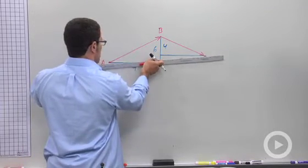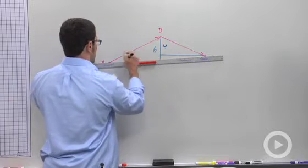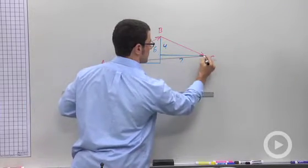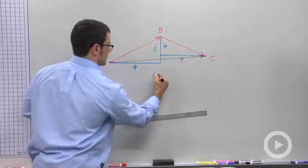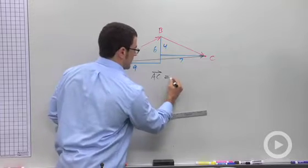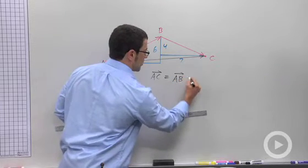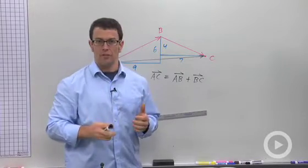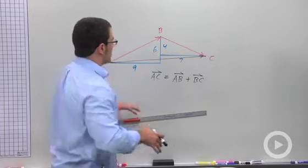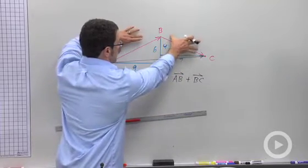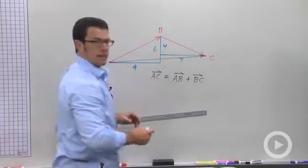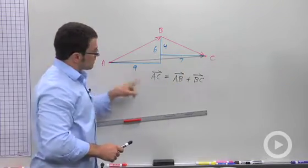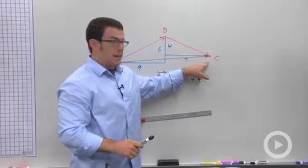So we define this vector to be the sum of the two vectors AB and BC. So this is vector AC. And AC is AB plus BC. Now this suggests how we're going to think about vector addition.